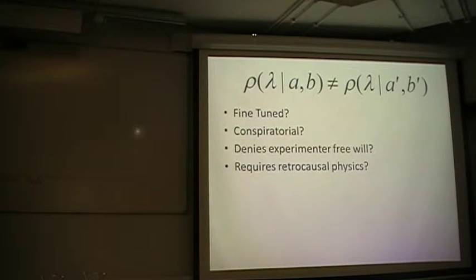However, I think almost universally in the literature, such models are considered to be implausible from a physical perspective, for various probably related reasons. Models have to be very fine-tuned, conspiratorial, something that Bell himself was concerned about, maybe there's some denial of experimental free will somehow, or maybe the only way to rescue them is through some retro-causal physics, which also most people find uncomfortable. I'm going to try and claim that the answer, actually, is no, there is a way to overcome these objections.